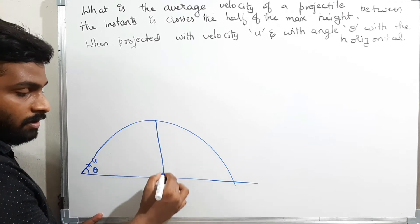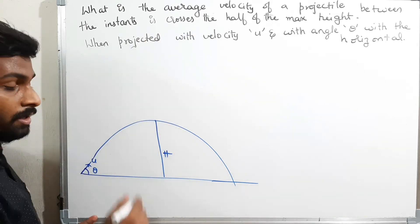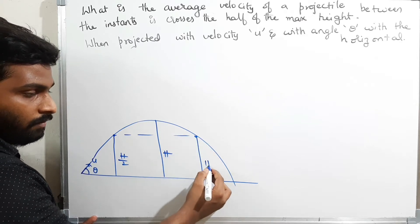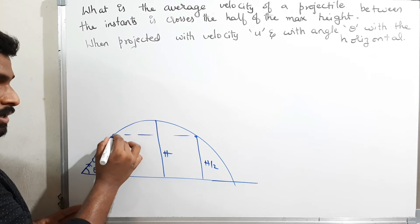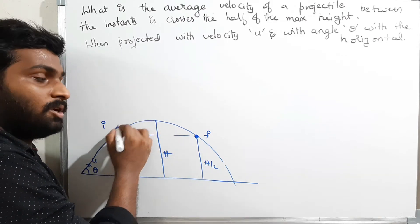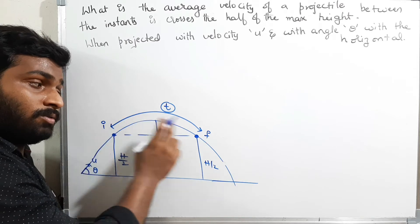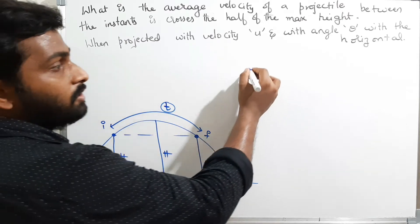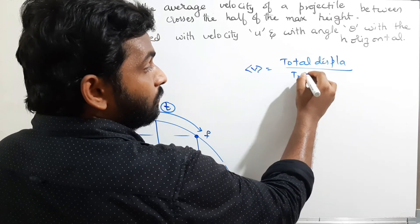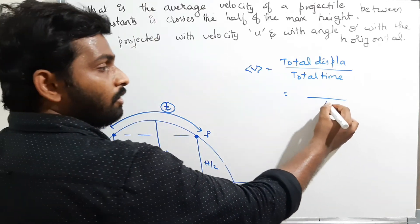This is the maximum height H, and we need to find the average velocity at the instances of crossing half of the maximum height. So somewhere at this point is half of the maximum height, and the same level on the other side is also half of the maximum height. This is the initial position and this is the final position. Assume the time taken to move from initial to final is T.